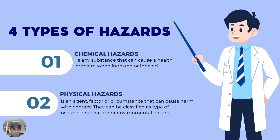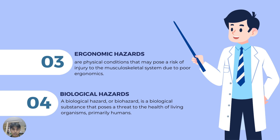For the four types of hazards: one, chemical hazards is any substance that can cause health problems when ingested or inhaled. Second, physical hazards is an agent, factor, or circumstance that can cause harm with contact. They can be classified as a type of occupational hazard or environmental hazard. Third, ergonomic hazards are physical conditions that may pose a risk of injury to the musculoskeletal system due to poor ergonomics. Fourth, biological hazards, or biohazard, is a biological substance that poses a threat to the health of living organisms.